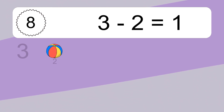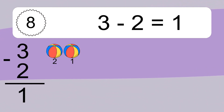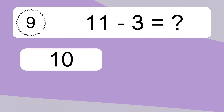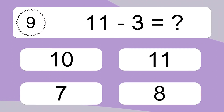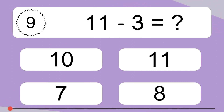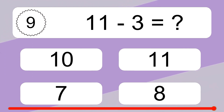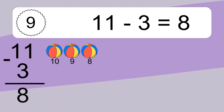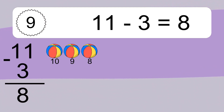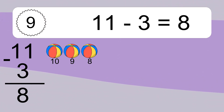3 minus 2 equals what? 3 minus 2 equals 1. Let's count it! 2, 1. 11 minus 3 equals what? 11 minus 3 equals 8. Let's count it! 10, 9, 8.